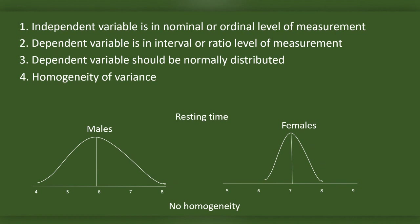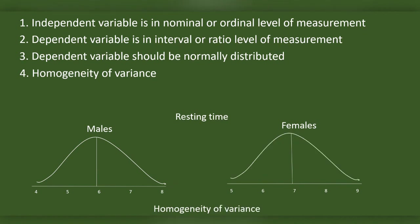Here in male data, the spread of the resting time scores is mean, that is six plus or minus two. In female data, the spread of the scores is mean plus or minus one. There is no homogeneity of variance in these categories. Here there is a homogeneity of variance.